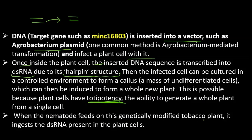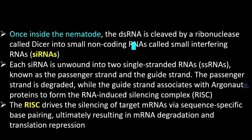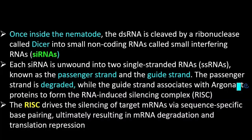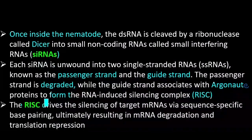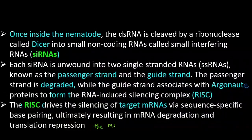When the nematode feeds on a genetically modified tobacco plant, it will ingest the double-stranded RNA present inside the plant cell. Once inside the nematode, that double-stranded RNA is cleaved by Dicer into siRNA — small interfering RNA. This siRNA unwinds into two single-stranded RNAs: the passenger RNA and the guide RNA. The passenger RNA is degraded, while the guide RNA is associated with Argonaute, which is a ribonuclease, and forms RISC. Lastly, this RISC drives the silencing of the target mRNA — in our case, the mRNA of Mink 16803.